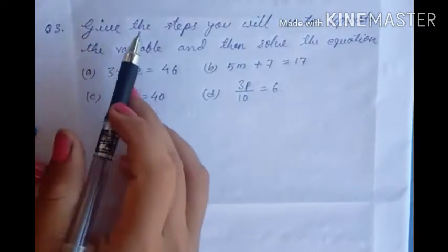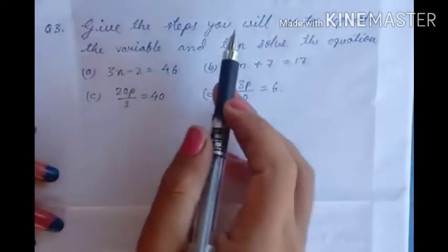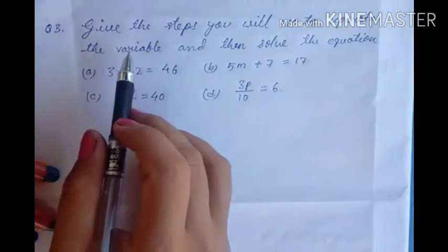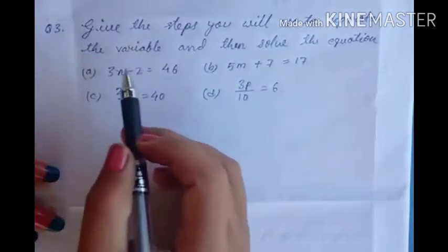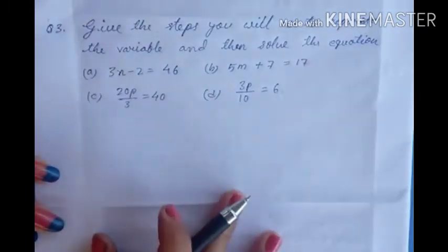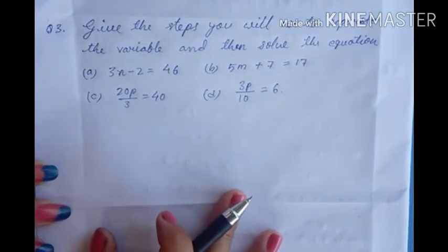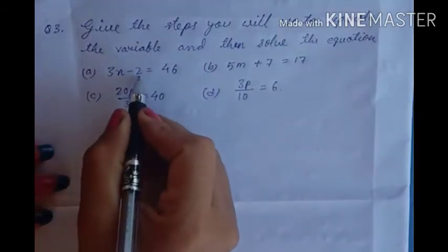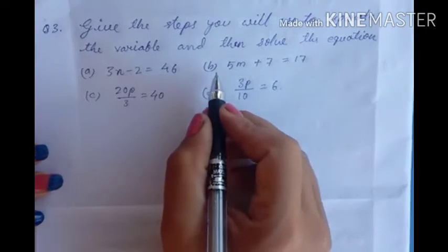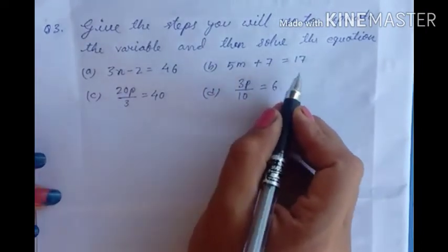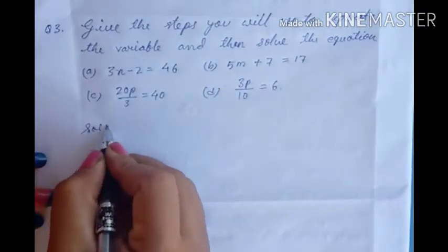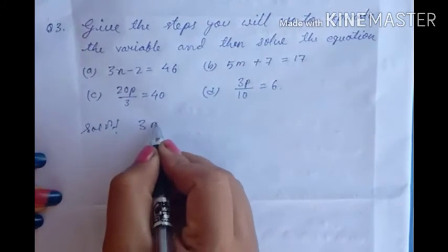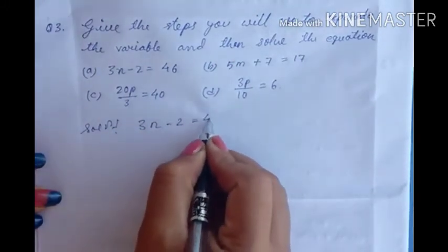Now question number 3. Give the step you will use to separate the variable and then solve the equation. We have to separate the variable and solve. Question A is 3n minus 2 equals 46, and B is 5m plus 7 equals 17.